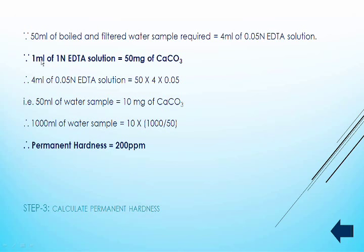This is for 50 ml of the water sample. So to get the answer in ppm, calculate for 1000 ml: 10 × 1000 / 50 = 200 ppm. That is the permanent hardness.